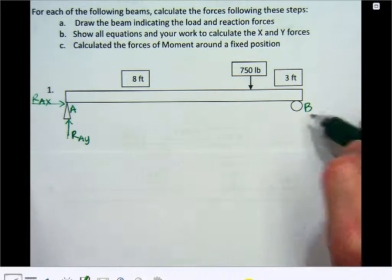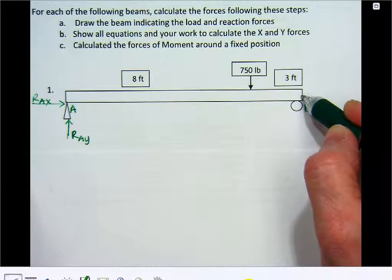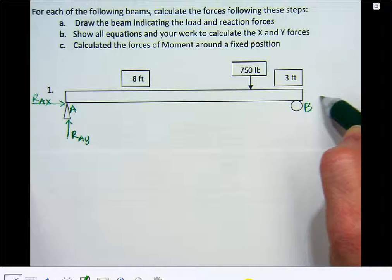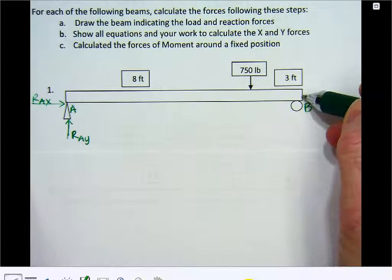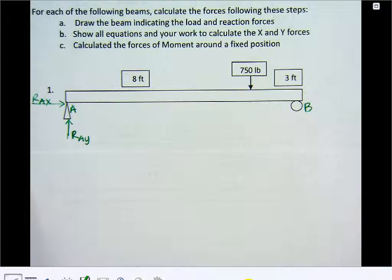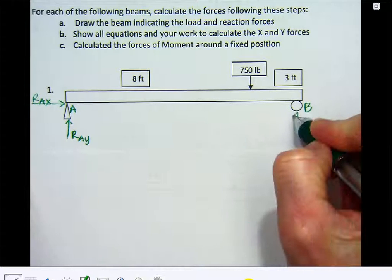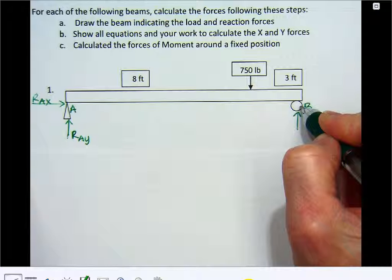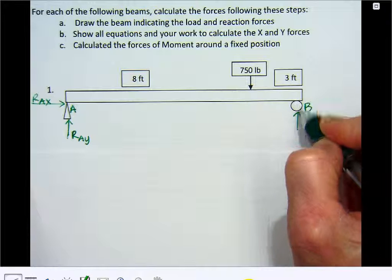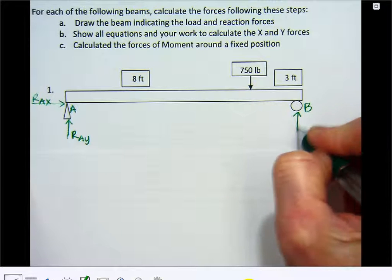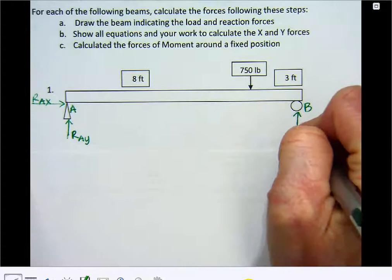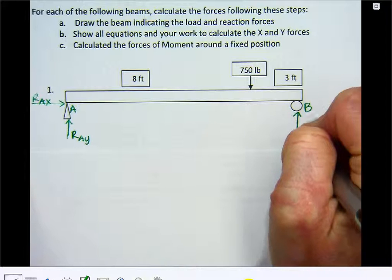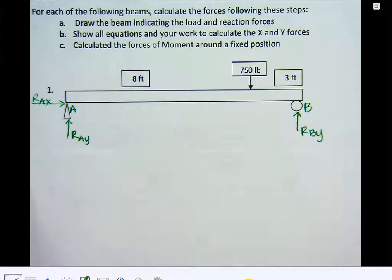But when we come over here to the roller, on the roller side, your bridge will be allowed to expand and contract, so there's no reaction back that's keeping this stationary on this end. So there's no reaction force in the x direction for the roller. But there is a reaction force. The beam rests on top of this pin, so the pin pushes back, or the roller, I'm so sorry. The roller pushes back, and we're going to call this the reaction force at B in the y direction.